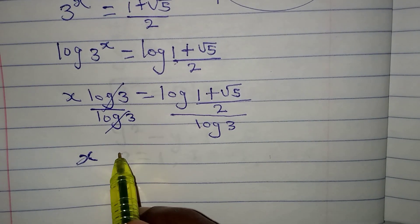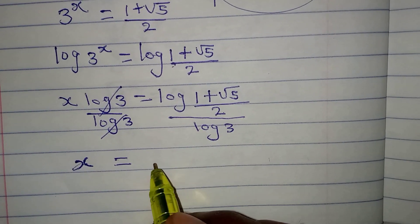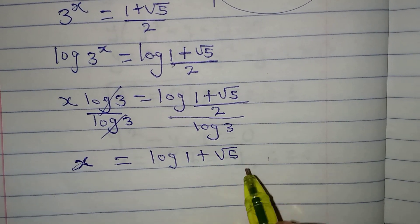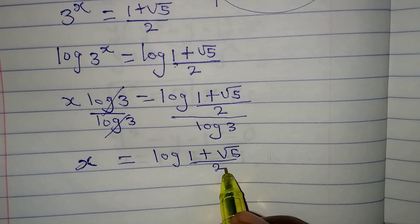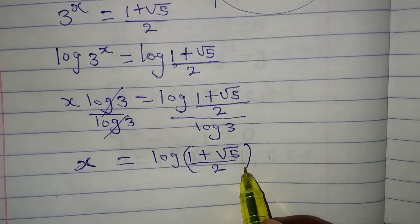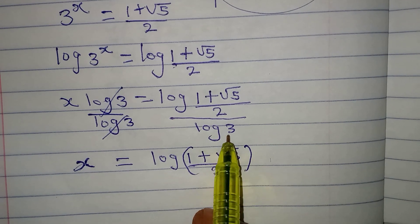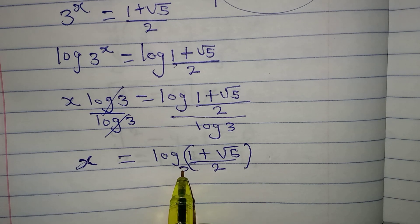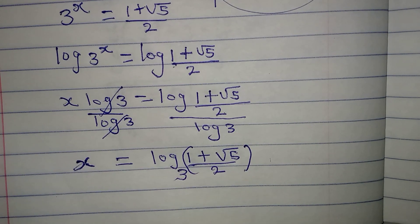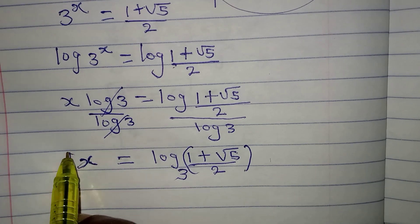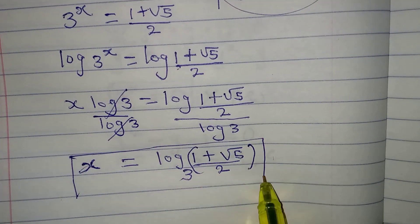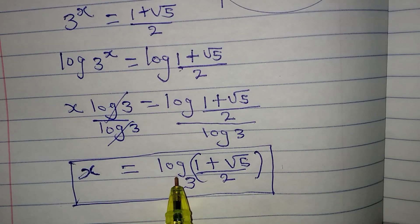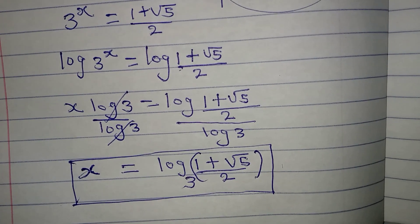Our x equals log of [(1 plus square root of 5) over 2], divided by log 3. Because it is divided by log 3, that log can become the base, giving x as log base 3 of [(1 plus square root of 5) over 2]. You can also convert this to a decimal form. Thank you for watching.